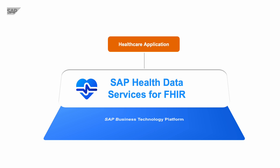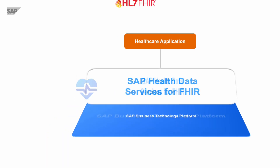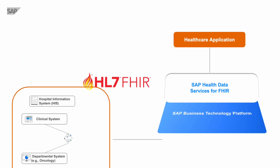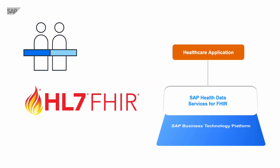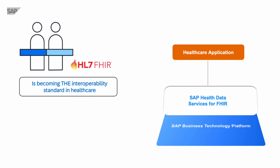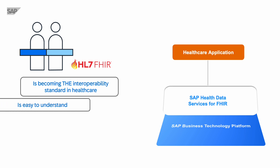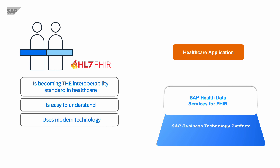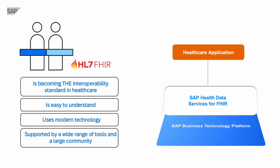It also facilitates the integration of your applications into existing system landscapes using the Healthcare Interoperability Standard HL7 FHIR. FHIR has become the go-to standard for interoperability in healthcare. The FHIR model and the underlying concepts are easy to understand and implement, as it uses modern technology such as RESTful APIs, JSON, and XML. There is a large community contributing to the standard, and an array of tools is available to support you in your development and integration efforts.